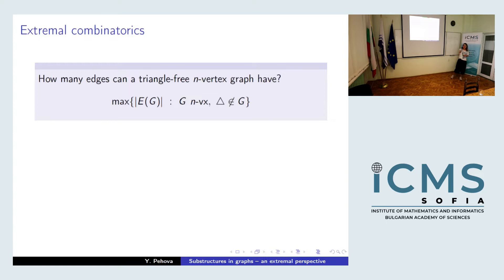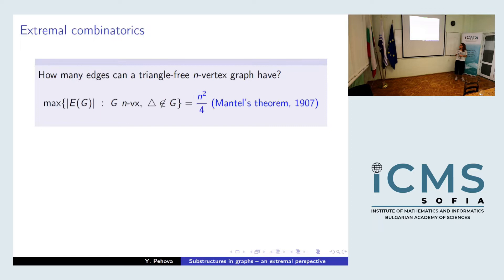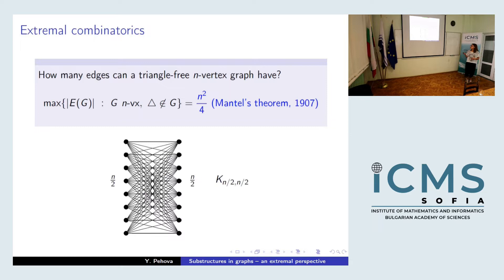The answer to the triangle-free question is n² over 4, probably the first theorem seen in a graph theory course — it's called Mantel's theorem, so it's quite old. There is a unique graph attaining this bound with exactly this many edges but no triangles: the complete bipartite graph, denoted K_{n/2, n/2}. In extremal graph theory, we not only care about proving that certain extrema equal the bound, but also which graphs attain those bounds — those are called extremal examples.